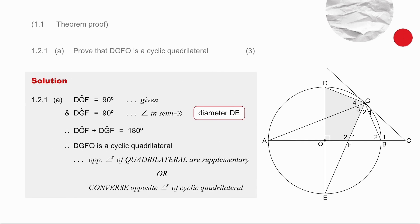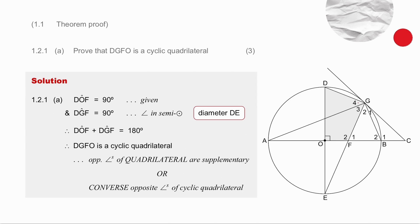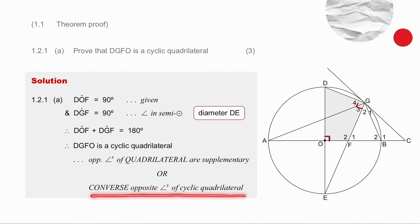They've told you that O is the centre, so DE is a diameter. That means angle DGE is 90 degrees. They gave you that angle DOF is 90 degrees. So angle DOF plus angle DGF is 180 degrees, and there you have opposite angles supplementary. That means DGFO is a cyclic quadrilateral. Your reason is: opposite angles of a quadrilateral supplementary, or converse of the opposite angles of a cyclic quadrilateral.